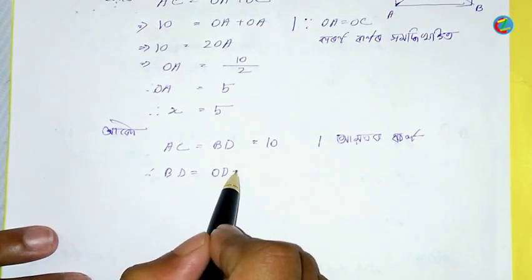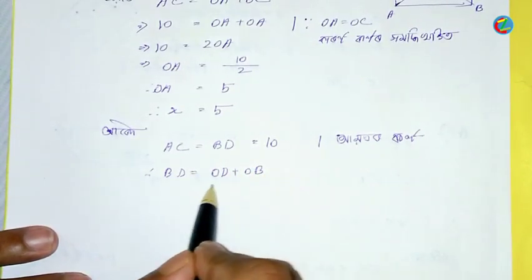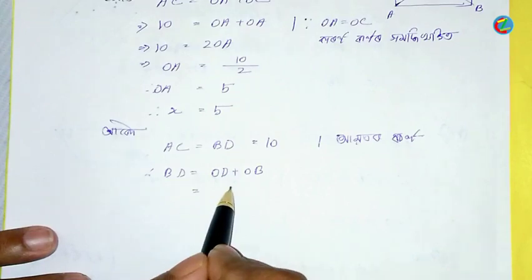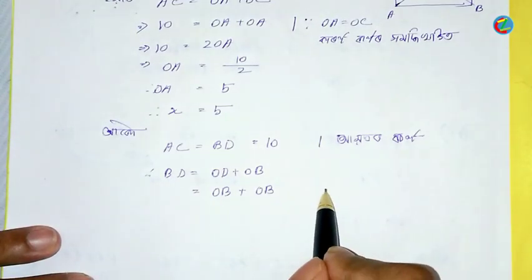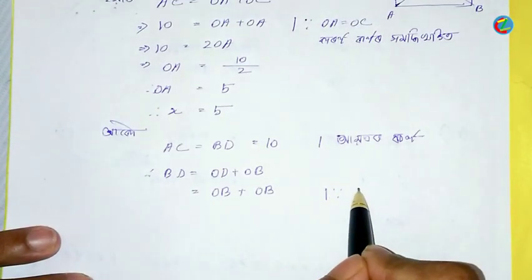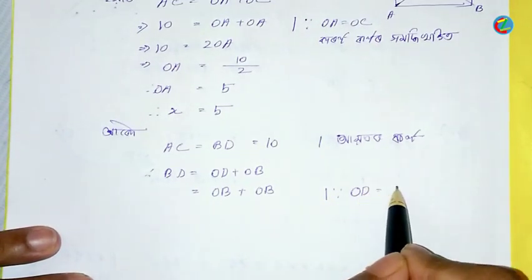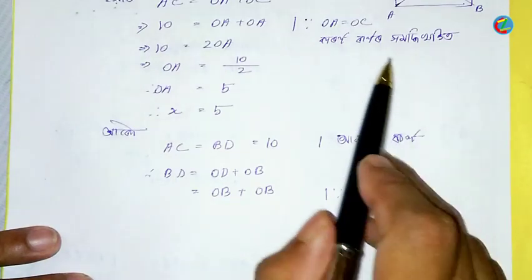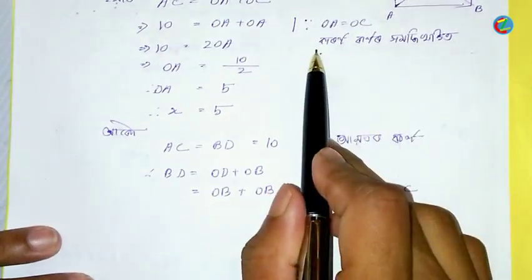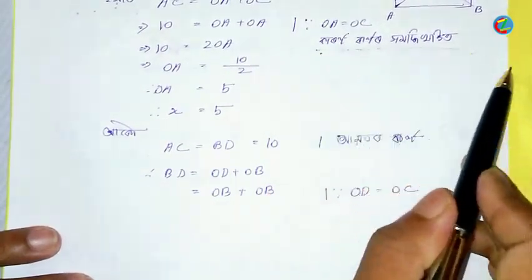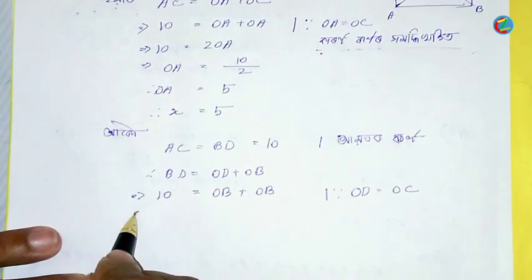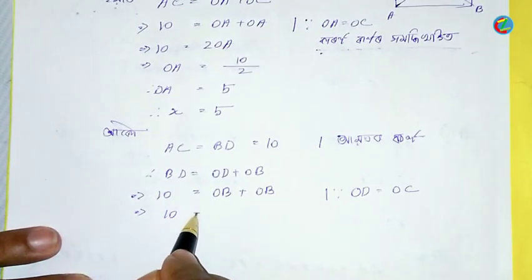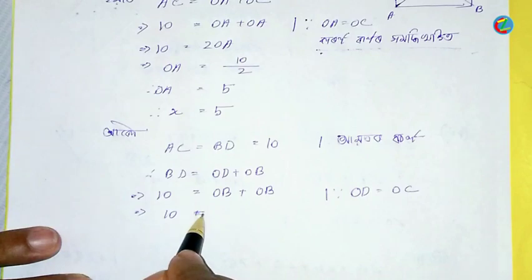BD is equal to OD plus OB. Now, BD is equal to OB. BD is equal to 10. This is BD — BD is equal to OB.